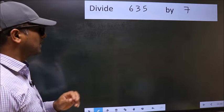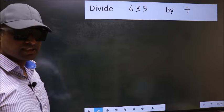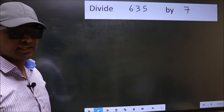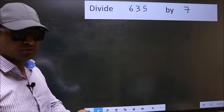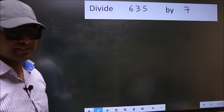Divide 635 by 7. While doing this division, many do this mistake. What is the mistake that they do? I will let you know. But before that, we should frame it in this way.